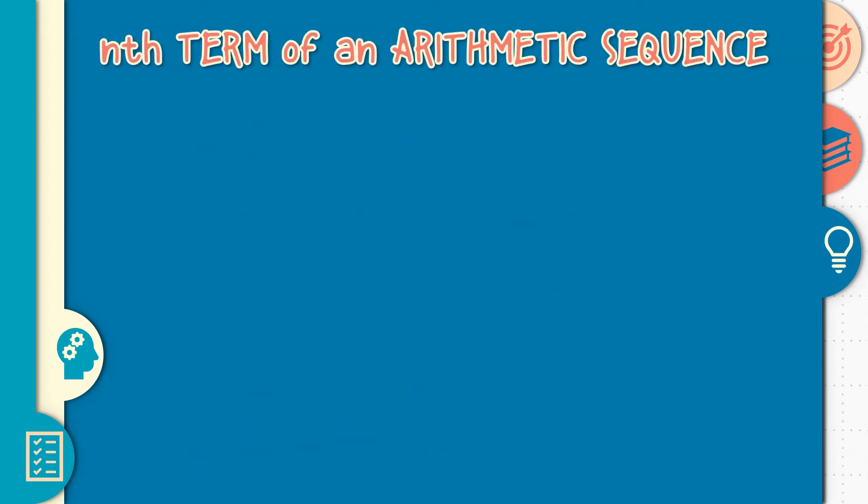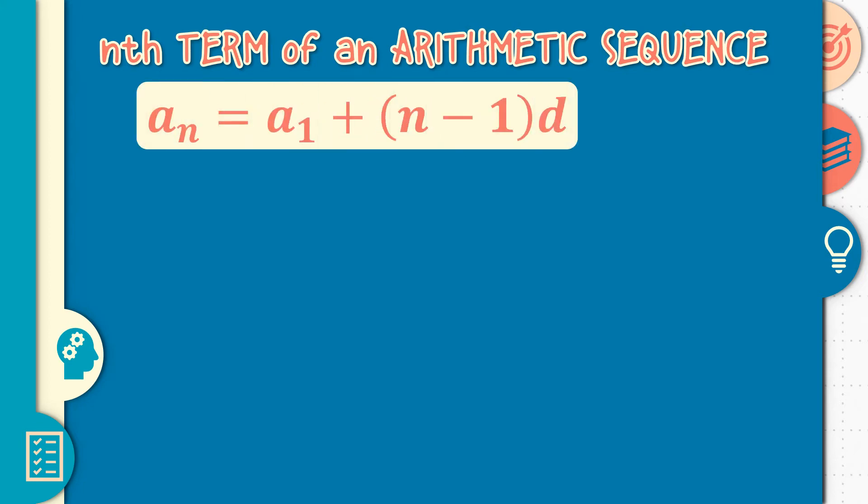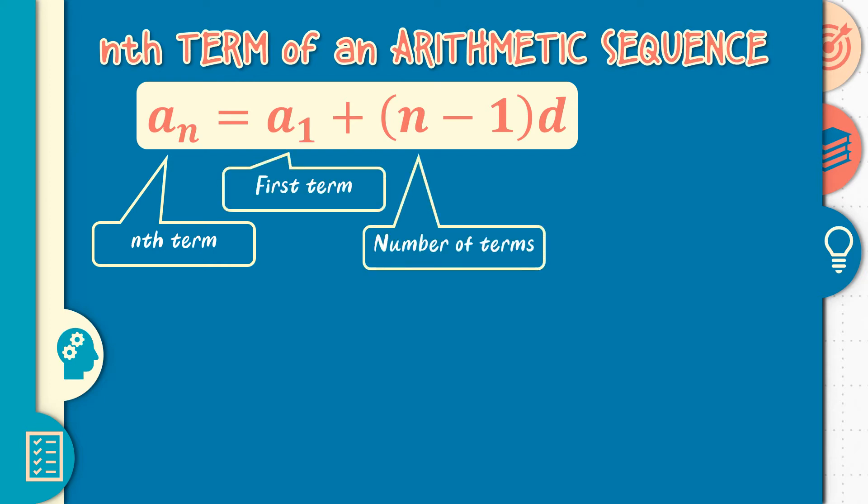Now we have the nth term of an arithmetic sequence. Our nth term for an arithmetic sequence is given by a sub n is equal to a sub 1 plus n minus 1 times d. Wherein a sub n is our nth term, a sub 1 is the first term, n is the number of terms, and d is the common difference.